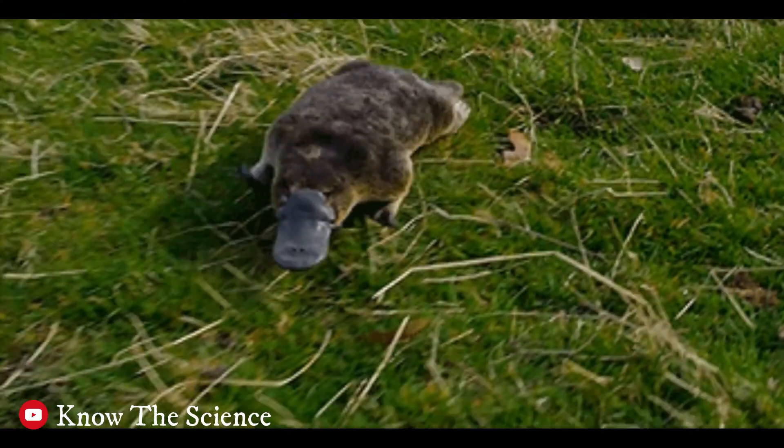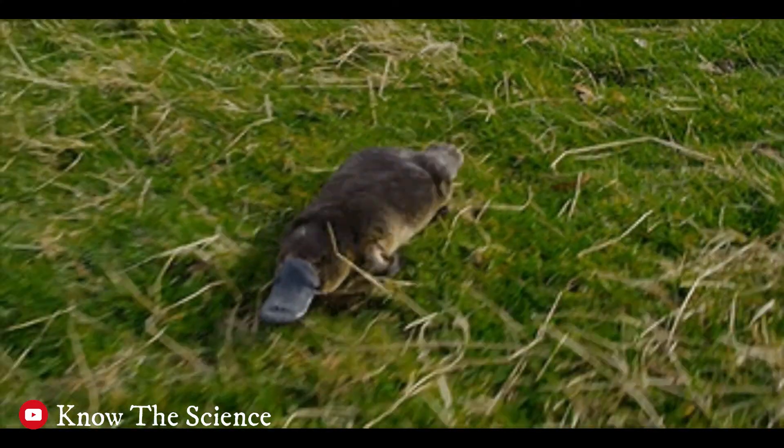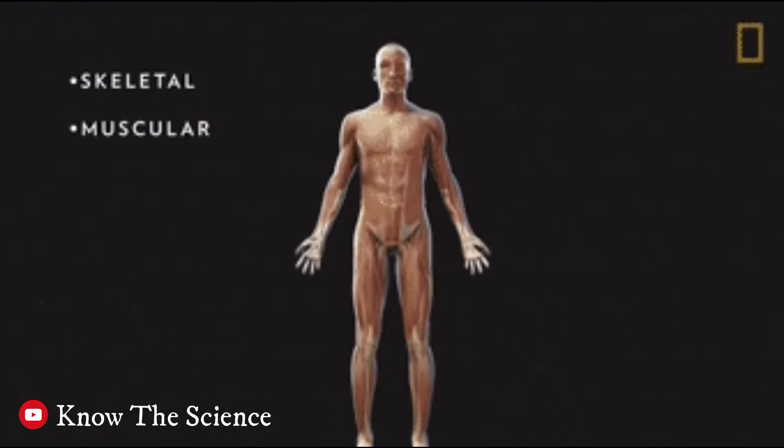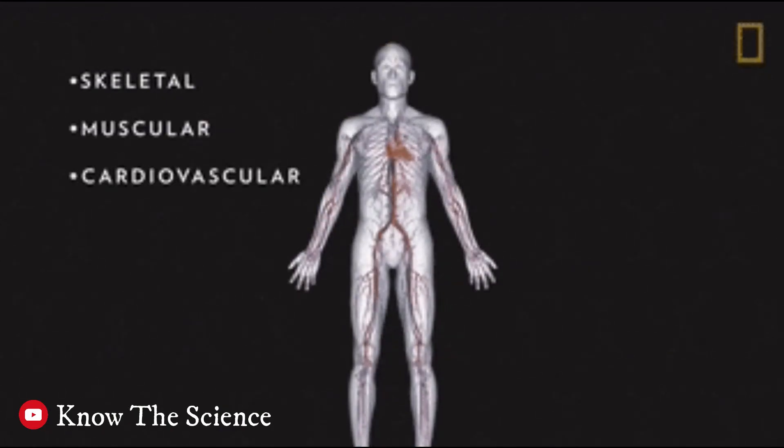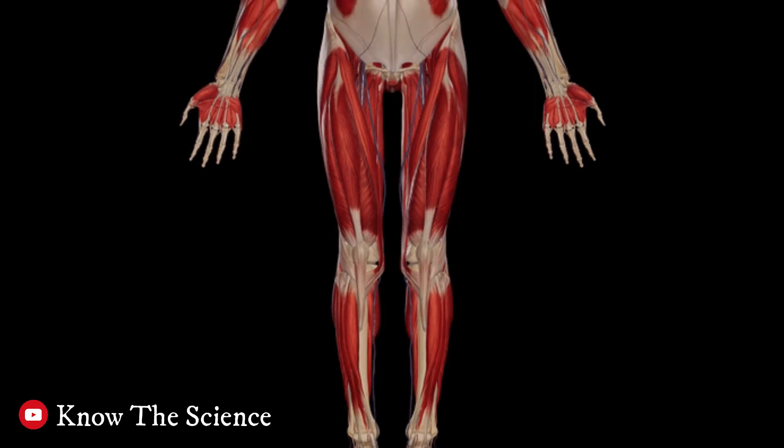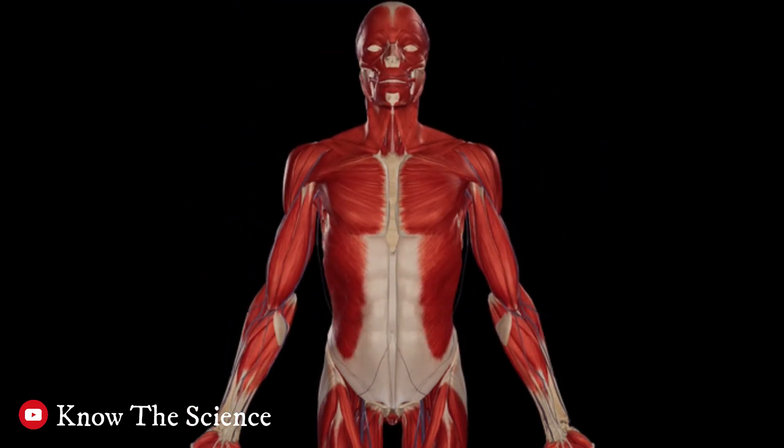Meanwhile, platypuses have a venomous spur on their hind legs. Humans too have invented tools, weapons and social structures that do most of these jobs without the need for venomous fangs, Live Science reported.